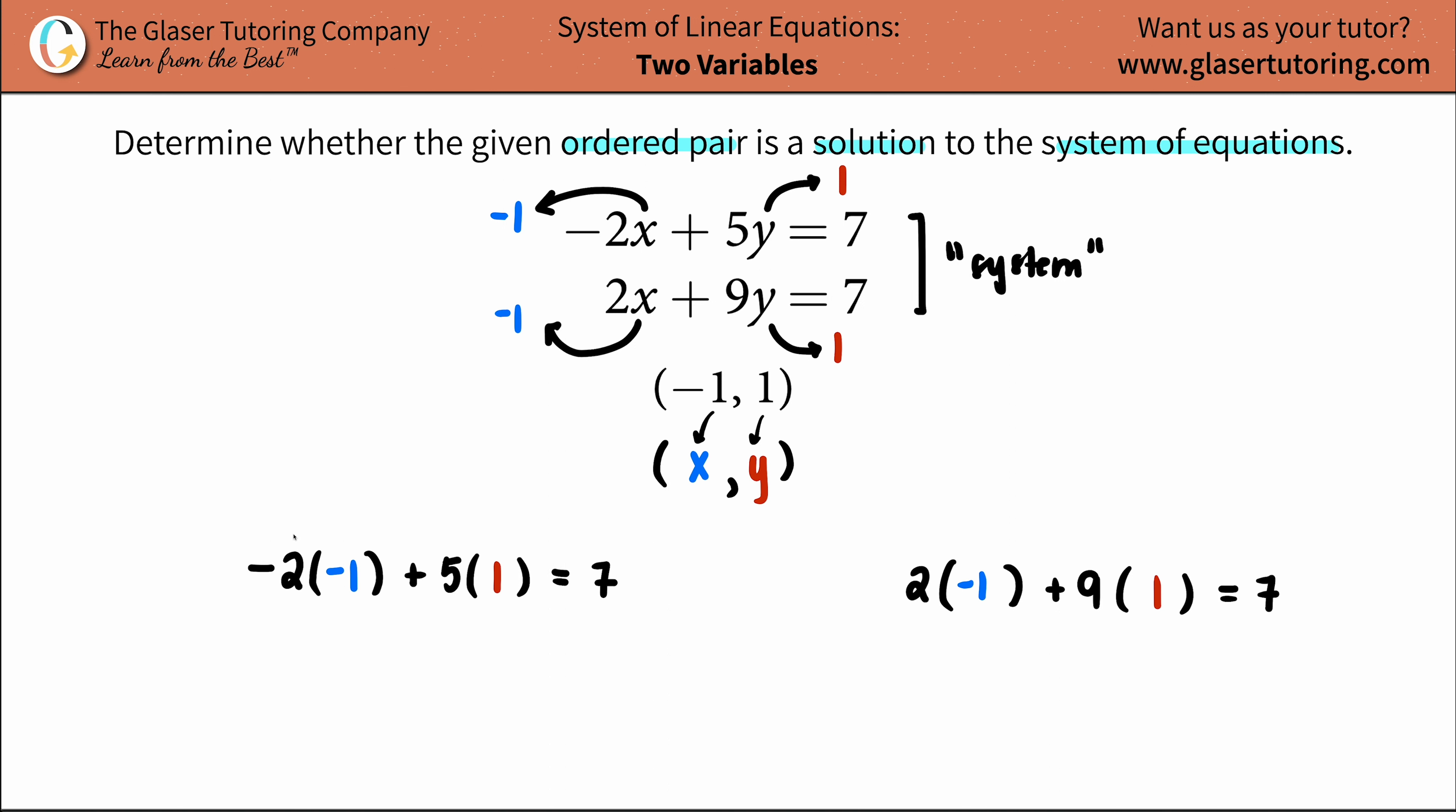Okay, so let's solve it now. Negative 2 times a negative 1 is 2, plus 5 times 1. 5 times 1 is 5. And this should equal 7. Let's see, 2 plus 5... 7 equals 7. So this makes sense. The same number is on both sides. 7 obviously equals 7. So we're going to give this a big check.